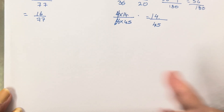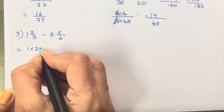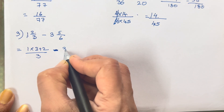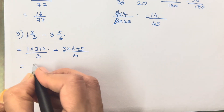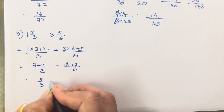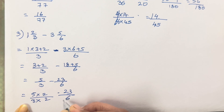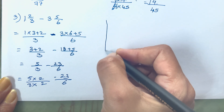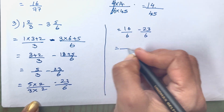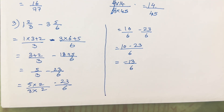Let's move on to the third sum: 1 and 2/3 minus 3 and 5/6. First we convert the mixed fractions: 3 × 1 + 2 upon 3 = 5 upon 3, and 3 × 6 + 5 upon 6 = 23 upon 6. Now rationalize: 5 × 2 over 3 × 2 = 10 upon 6. Both denominators are now 6. So 10 − 23 upon 6 = minus 13 upon 6.